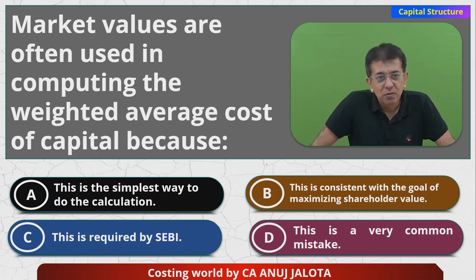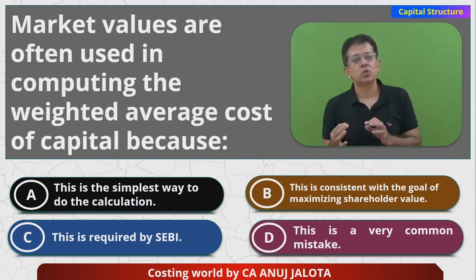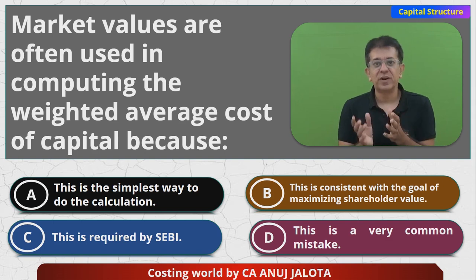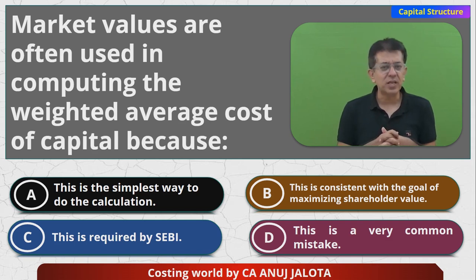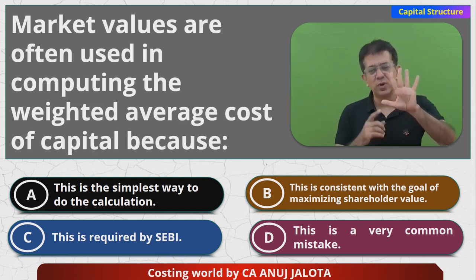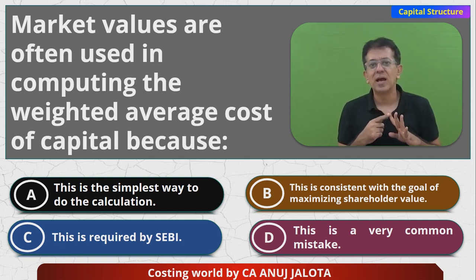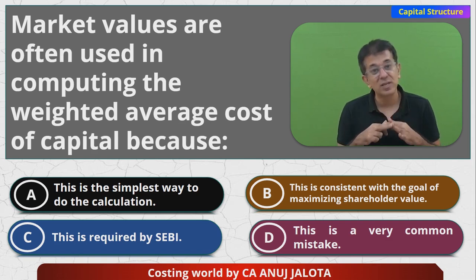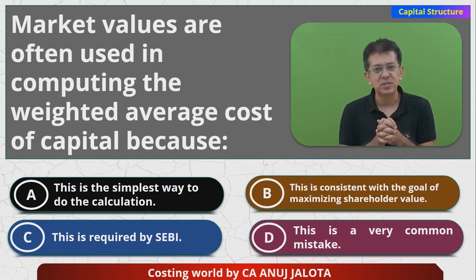Now, whenever you compute WACC — Weighted Average Cost of Capital, symbolized as ko or kc — you need to find the weighted average. For weighted average you require weights. Weights are usually of four types: you have book value weights, market value weights — which is what this question is about — marginal weights, and target weights.